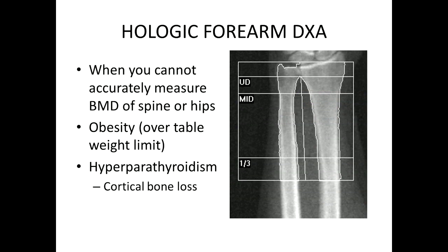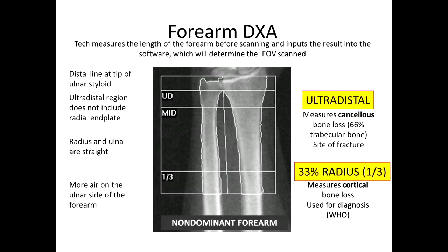Forearm DEXA can be used in addition to or as an alternative to central DEXA — for example, when the spine and hips cannot be accurately measured due to metal hardware, or when the patient exceeds the table weight limit, as the patient can be positioned in a chair next to the scanner. Forearm DEXA is also preferred in hyperparathyroidism, as bone loss primarily occurs in the cortex. In the Hologic system, the distal line is located at the ulnar styloid, and the one-third radius (33% radius) measures cortical bone loss and is the area used for diagnosis.